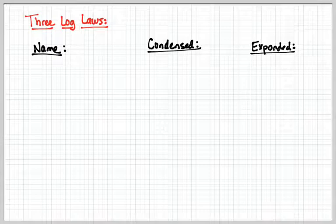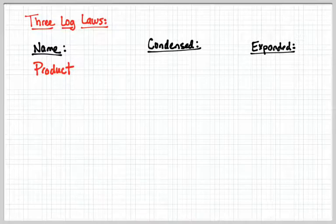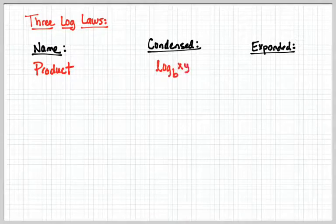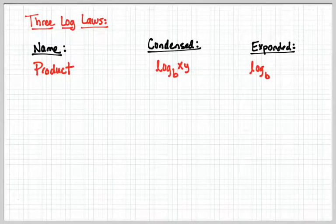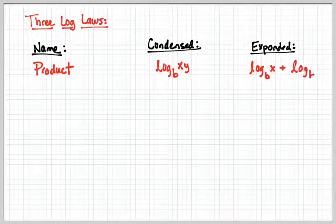Our first one dealt with problem 97, and we call that law the product property. Condense means to make smaller. So the condensed form for product is log base b of xy. It's the smallest the form can get. And the expanded form is log_b(x) + log_b(y).